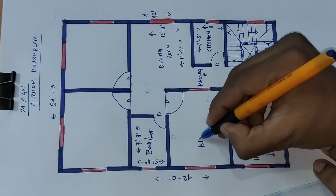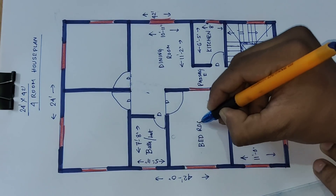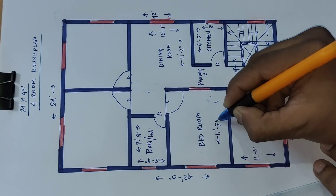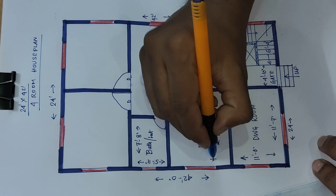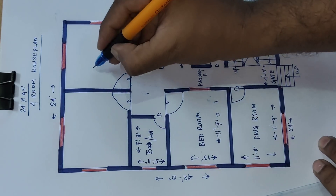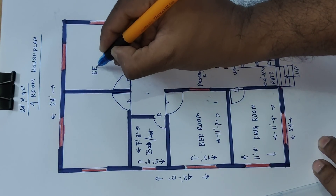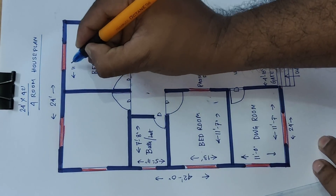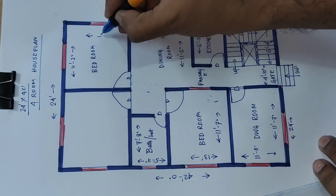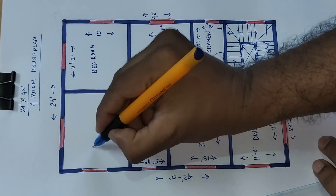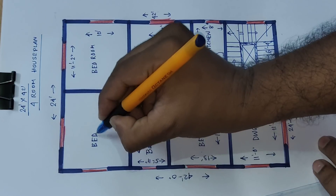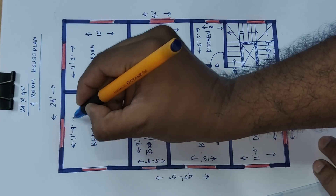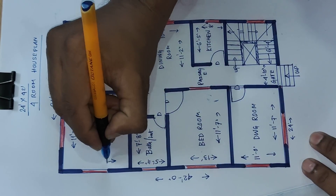Next, bedroom. Bedroom distance: 11 feet 7 inch and 13 feet. Okay. And this side distance 10 feet. Okay. Next bedroom: distance 11 feet 7 inch and 10 feet. Okay.